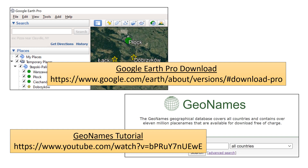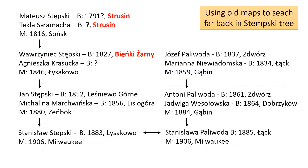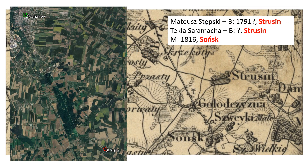Here again are the web links to help you use these resources. For one last example, reaching far back in the Stemski tree, let's try to find Struzan and then Bienki Żarni. Struzan is easy to find on Google Earth and on the old map used previously to find Stemski places, and the place found is near Sońsk, so this must be the right Struzan.